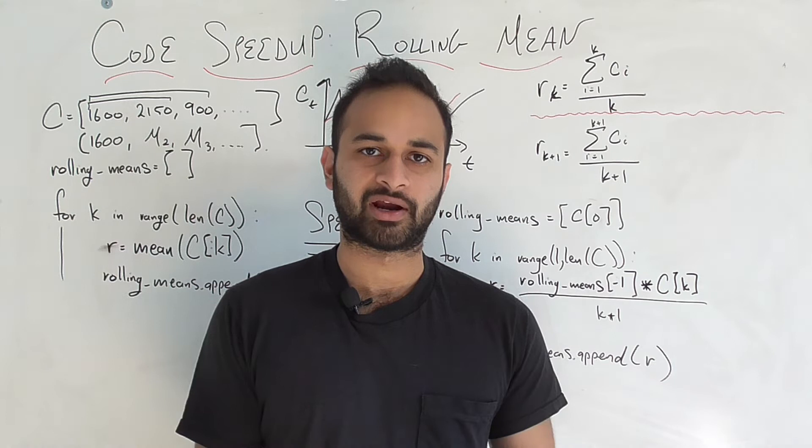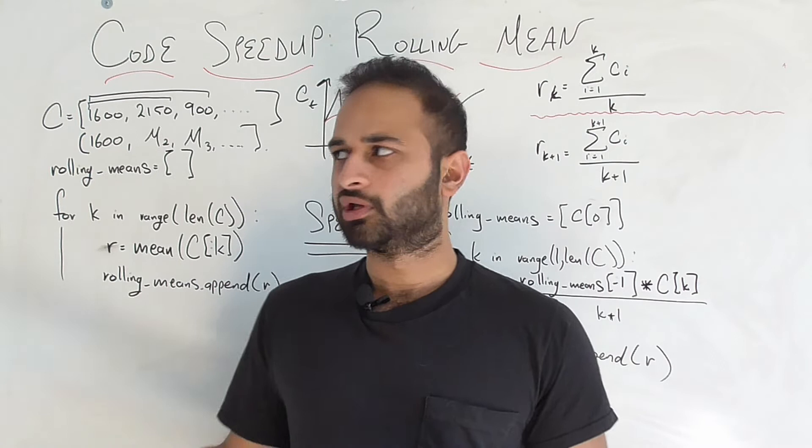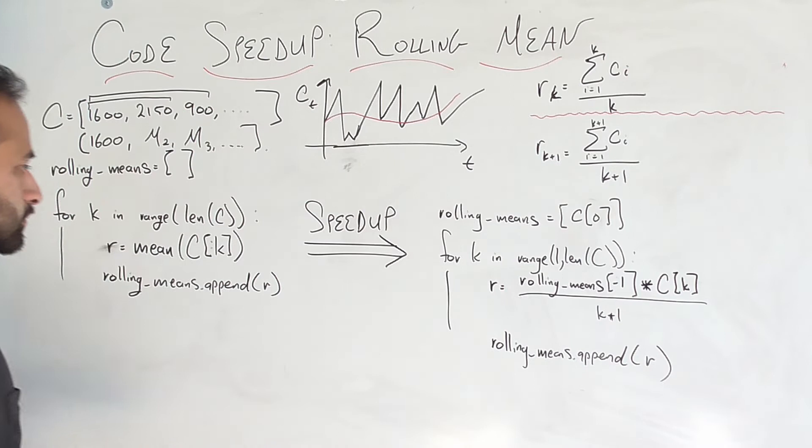Because a lot of times you don't care about the jumpiness, you just care about what's the shape of my curve in general. So that's the motivation for why we care about rolling averages. How might you compute it using code? We're going to be using Python slash pseudocode for these examples.